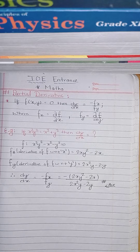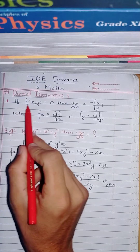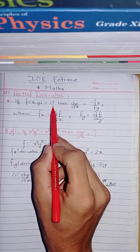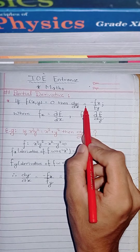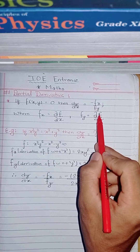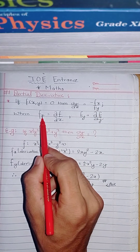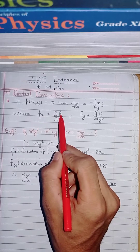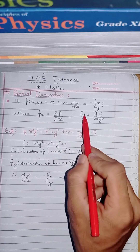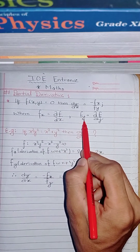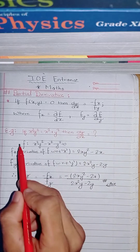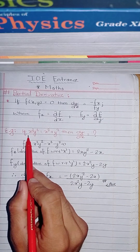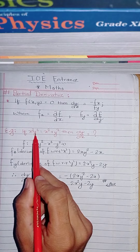In trans math, partial derivative: if f(x, y) is equal to 0, then dy/dx is equal to minus fx by fy, where fx is the derivative of f with respect to x, and fy is the derivative of f with respect to y. One example question: if x squared times y squared is equal to...